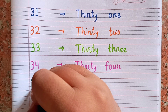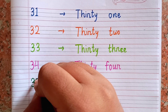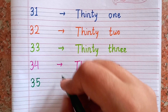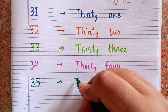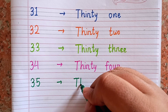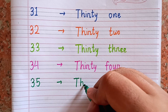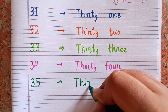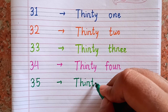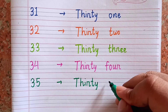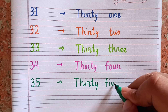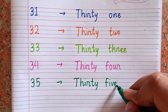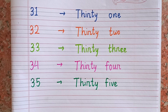After thirty-four, the next number is thirty-five — 3-5. The spelling of thirty-five is T-H-I-R-T-Y F-I-V-E. 35.